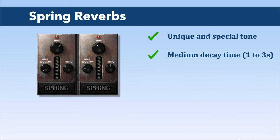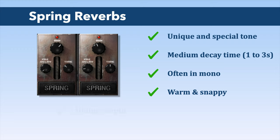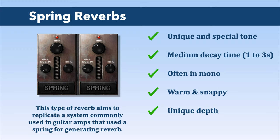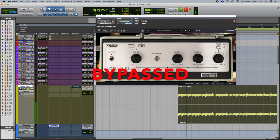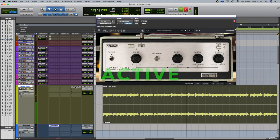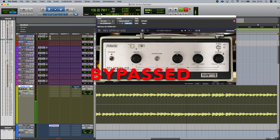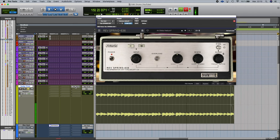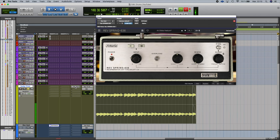The audio output of a spring reverb sounds like a very short delay repeated many times, giving the impression of a modulated reverb. Its decay time is medium, ranging from one to three seconds for most. Spring reverb, often in mono, gives a very experimental side to a source — with its warm and snappy tone, it can give a unique depth to the mix. Spring reverb is also very often found in guitar amps. Let's listen to an audio example on an electric guitar.